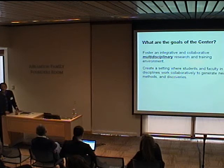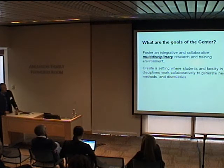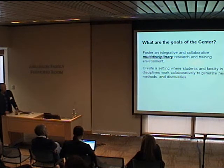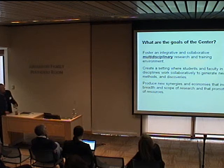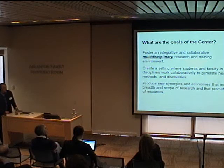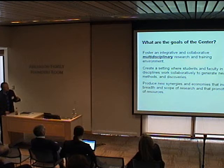We're trying to establish a research and training foundation for 2030 with the Center for Behavioral Neuroscience at American University. Our goals are to foster multidisciplinary and interdisciplinary research and training — looking across different types of sciences to answer problems that have to do with the brain, the nervous system, and how they impact behavior. We want to create a setting where faculty and students from different disciplines work collaboratively together. We can understand things from different perspectives and come up with novel ideas and discoveries when we look at things from the framework of different disciplines. This will also produce synergies — not only intellectual and conceptual, but also economies that increase the breadth and scope of our research and promote efficient use of resources.